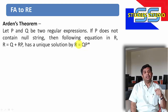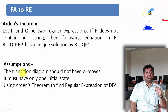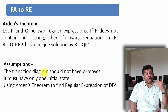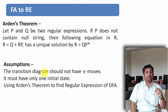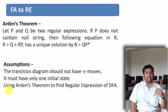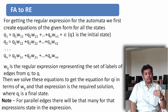We proved this in our previous video. In order to apply this theorem while converting a DFA to regular expression, we have some assumptions. First, the transition diagram should not have any epsilon moves — if it does, we need to eliminate them and convert it to a DFA first. Second, it must have one initial state only. Then we can apply Arden's theorem to find the regular expression.